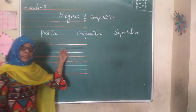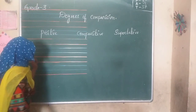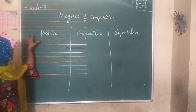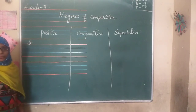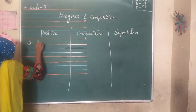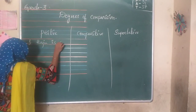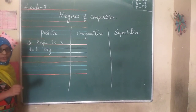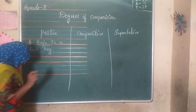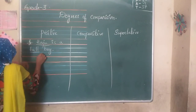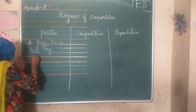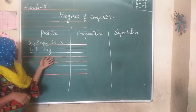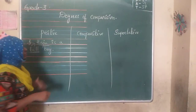Let us see the degrees of comparison with an example. Let us take an adjective. For the positive degree: 'Raju is a tall boy.' We are talking about Raju — Raju is a noun, and 'tall' is the adjective because the word tall is saying something about Raju. When we are talking about only one person, we use this positive degree.